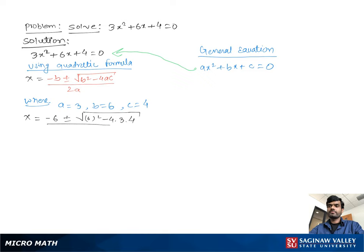We get x equal to negative 6 plus minus square root 6 square minus 4 times 3 times 4 over 2 times 3. Then we get negative 6 plus minus square root 36 minus 48 over 6.